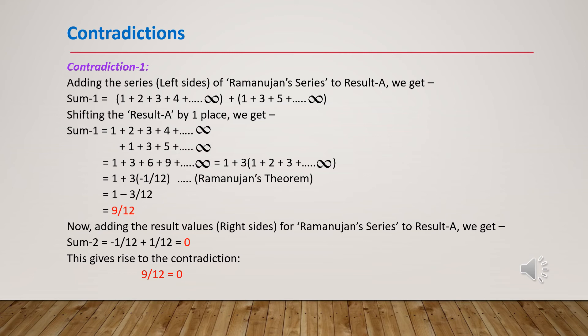Now adding the right-hand side values: Ramanujan's result is minus 1/12, and Result A is plus 1/12. Their sum equals 0. So the left-hand side gives 9/12, but the right-hand side gives 0. This is a contradiction: 9/12 equals 0.